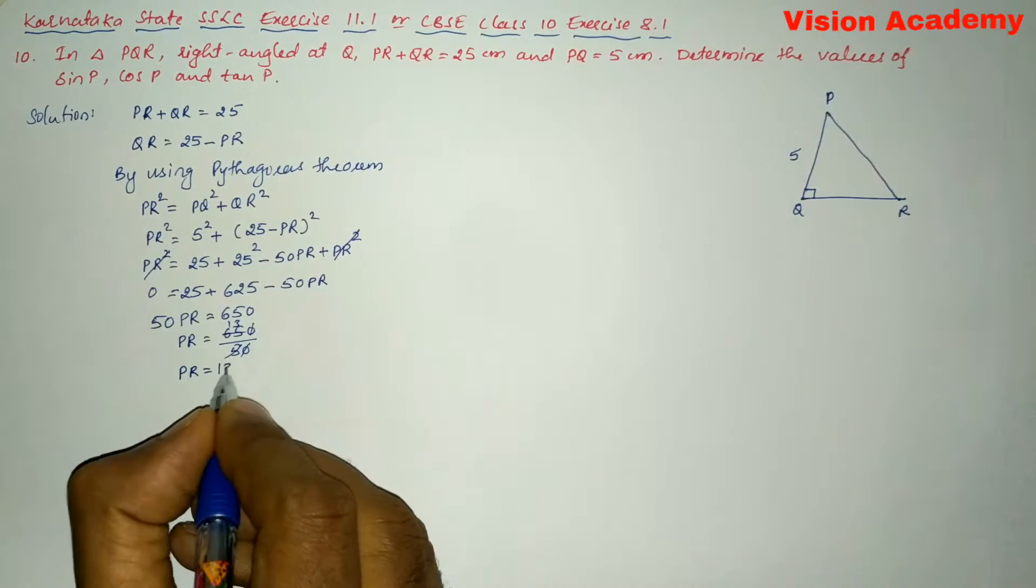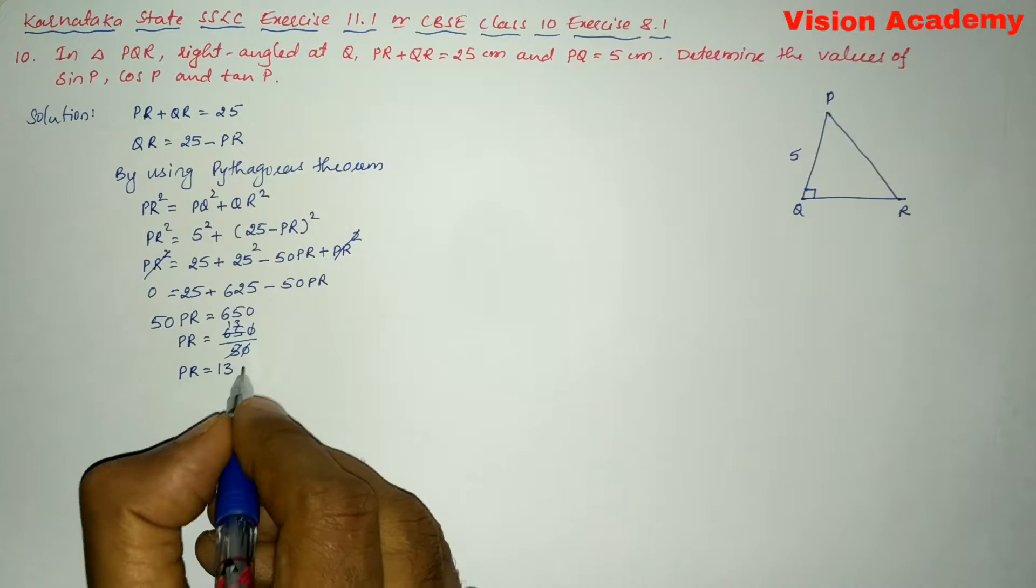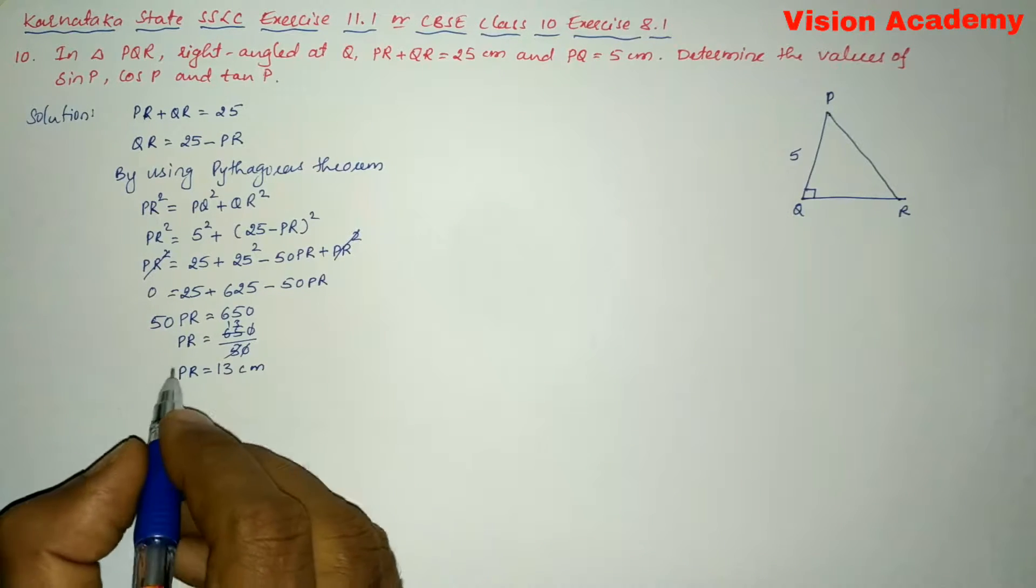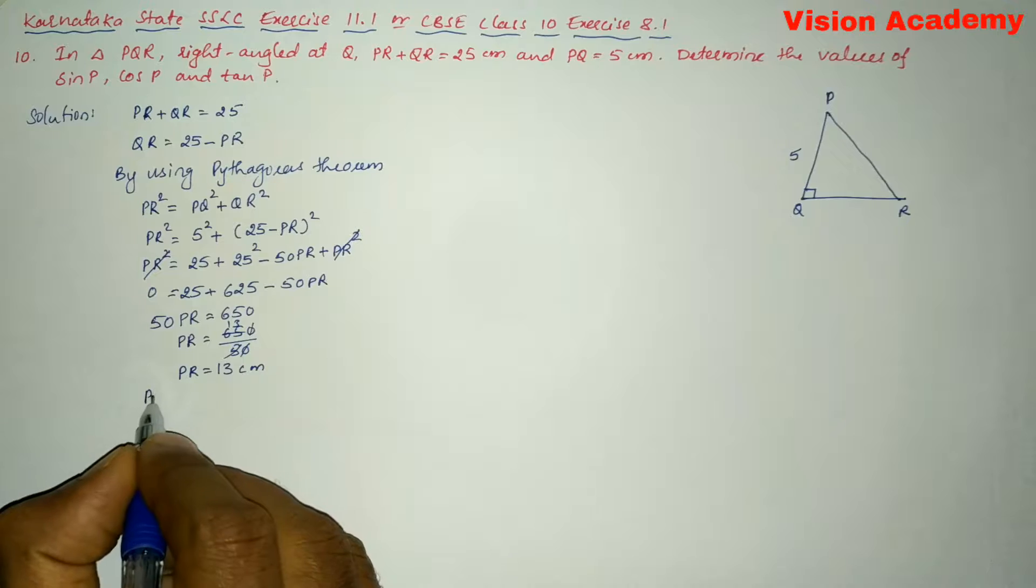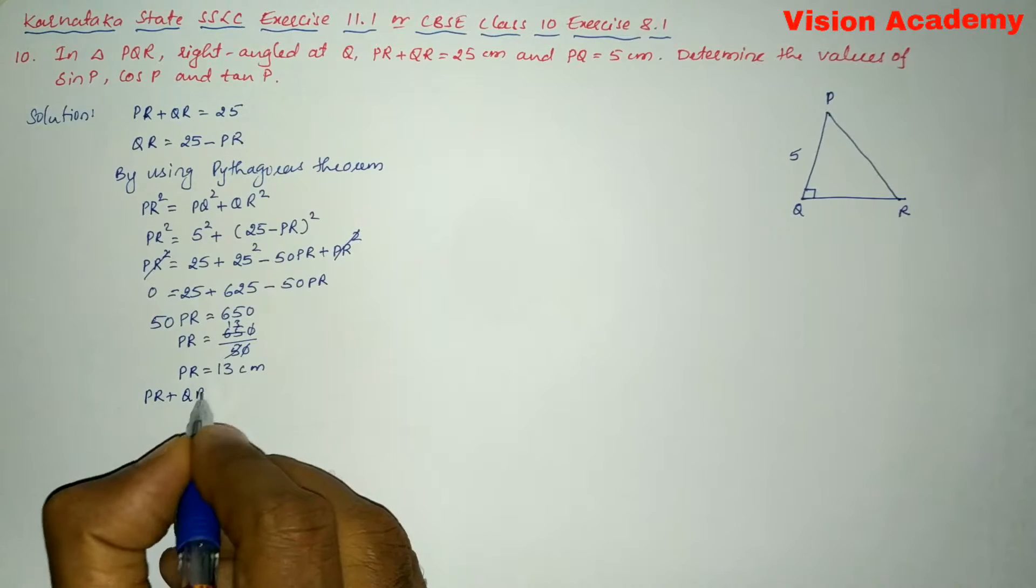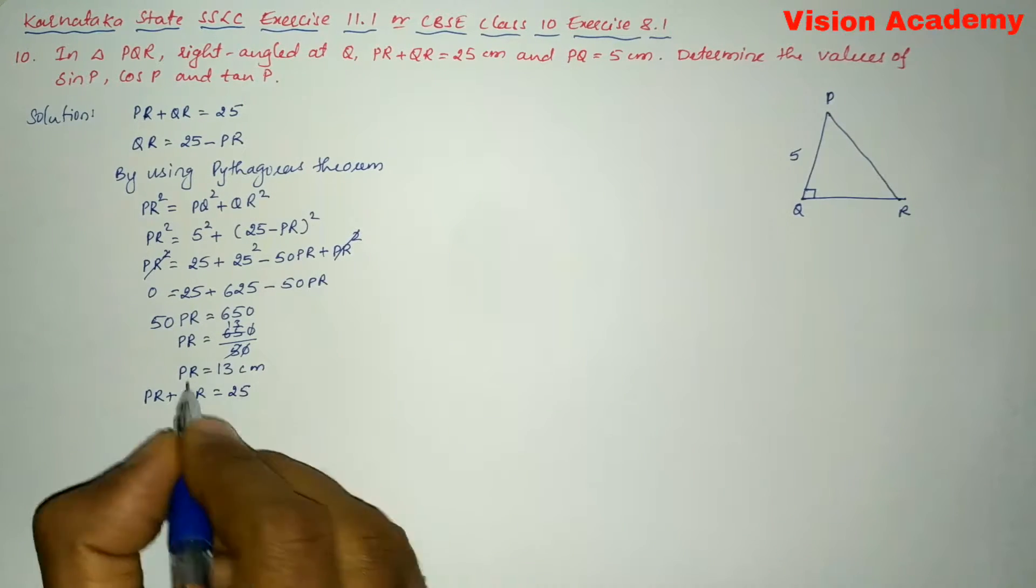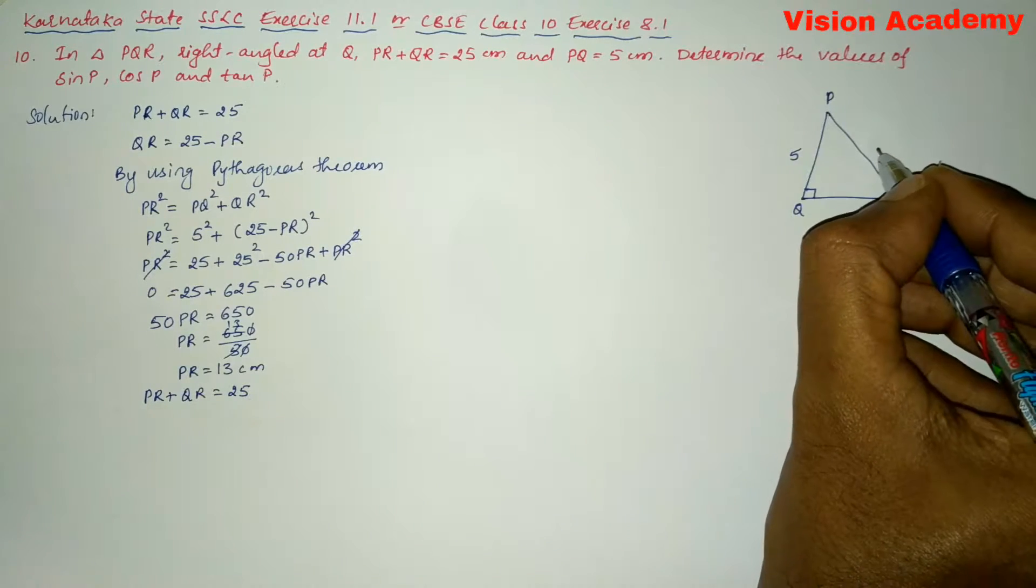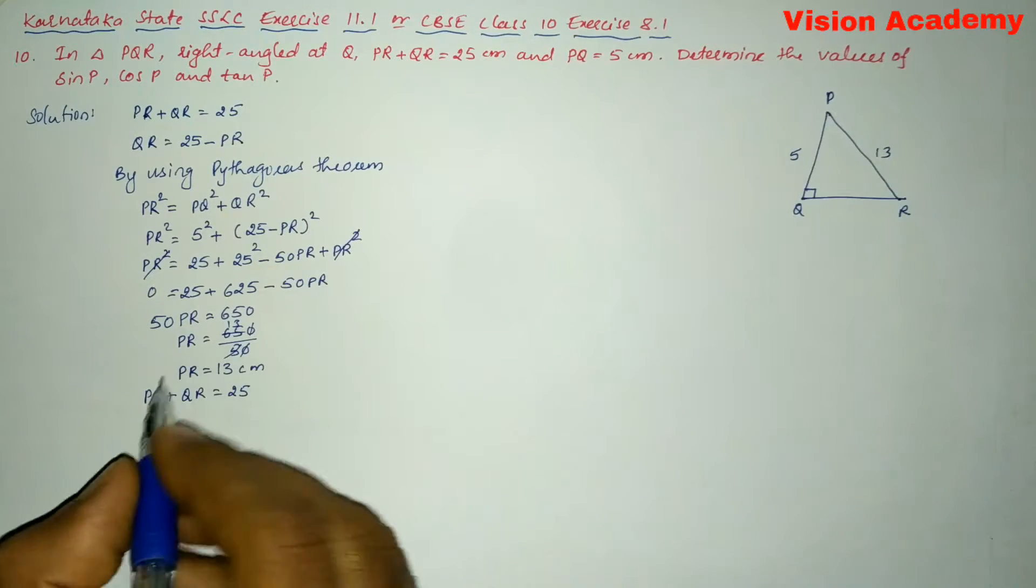We can write next, it is already given in the question that is PR plus QR is equal to 25. Here PR is what, PR is 13 centimeter and we can easily determine what is the value of QR by transforming this one this side.